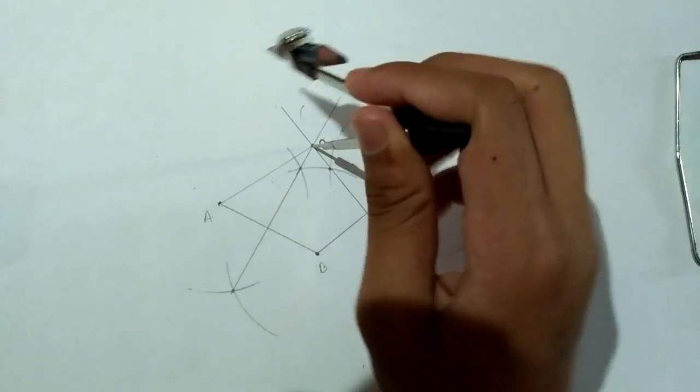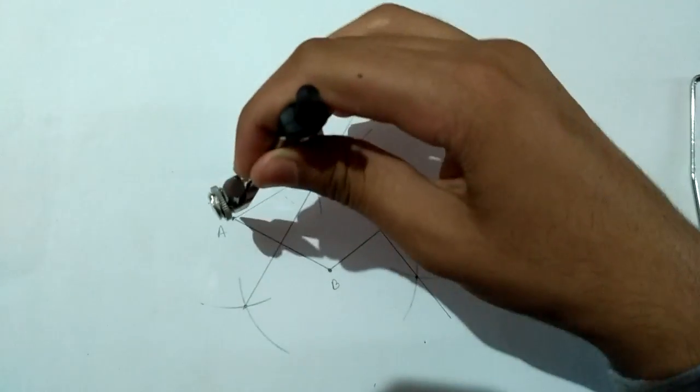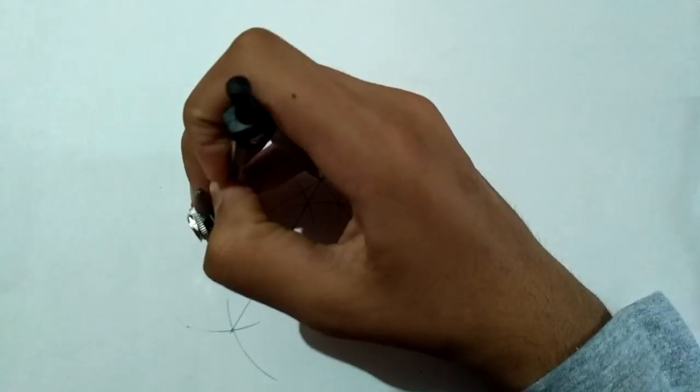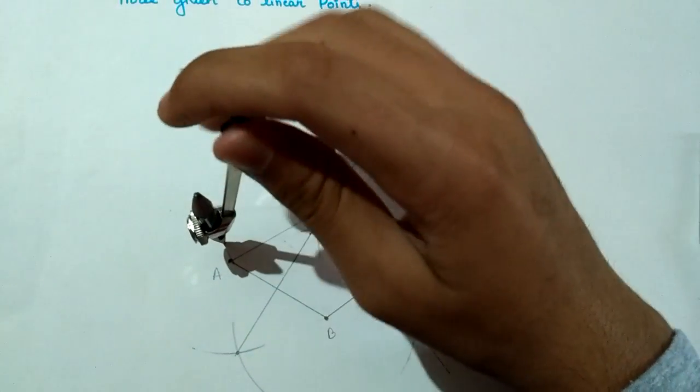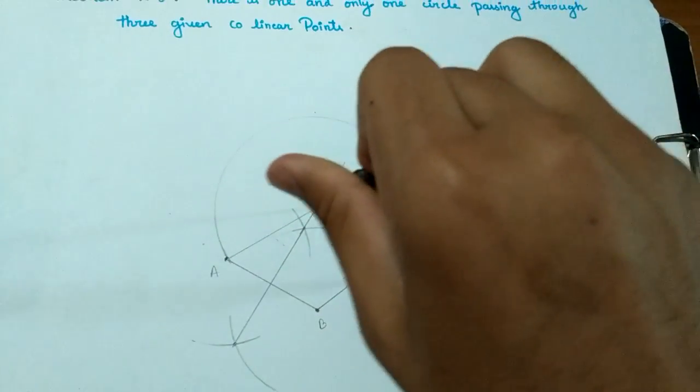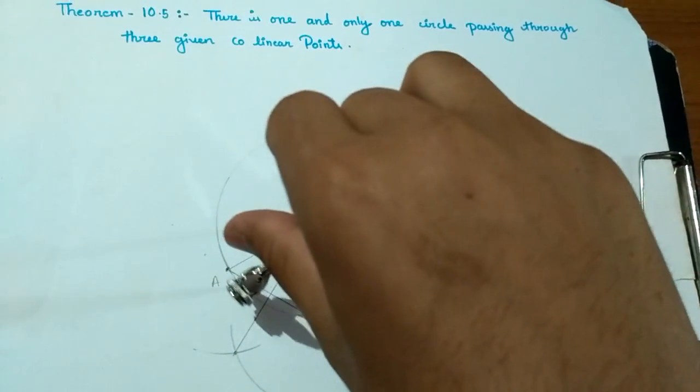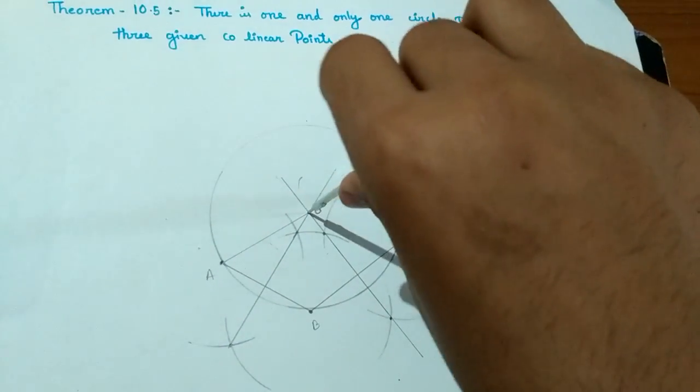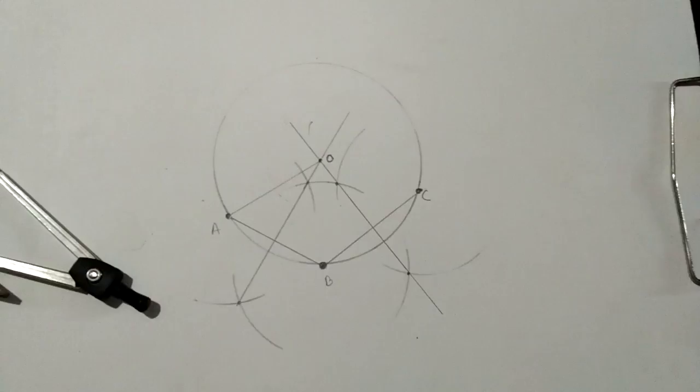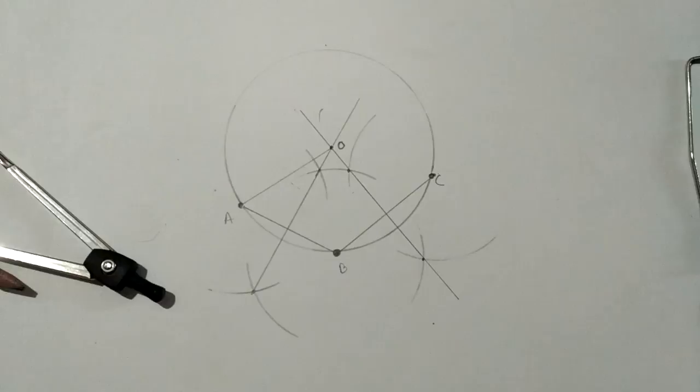I have taken this point, so I will construct a circle using this point. See, I will construct a circle here. You can see that it is passing through these three points. The circle is passing through A, B, and C.